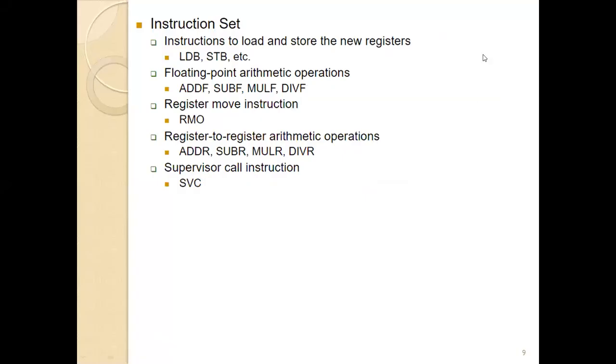Regarding the instruction format: a machine instruction has an op code (operation code) and an operand. All machine instructions on the standard version of SIC have a 24-bit format. The first 8 bits are reserved for the op code, the next bit is the flag bit X used to indicate the addressing mode, and the next 15 bits are reserved for the address indicating the position of the operand in memory.